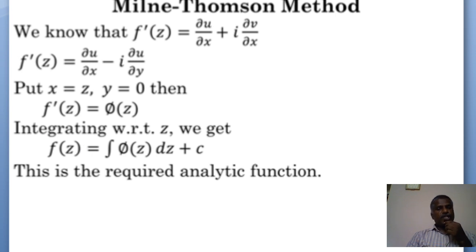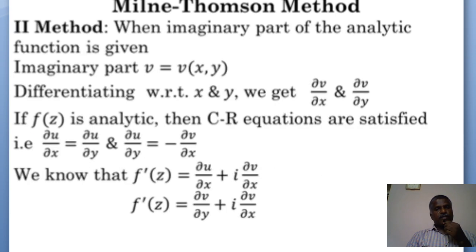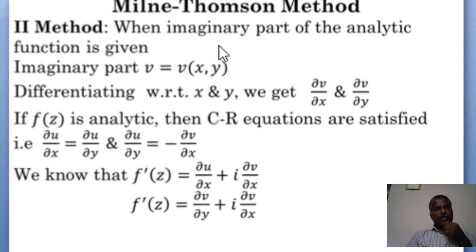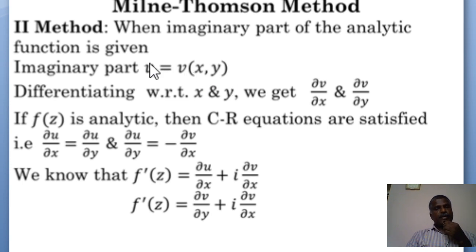Similarly, we construct analytic functions when the imaginary part of the analytic function is given. In method 2, we explain how to construct the analytic function when the imaginary part is given. We represent the imaginary part by v, that is v = v(x, y). We differentiate partially with respect to x and y, finding ∂v/∂x and ∂v/∂y.